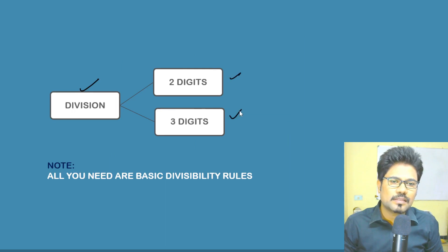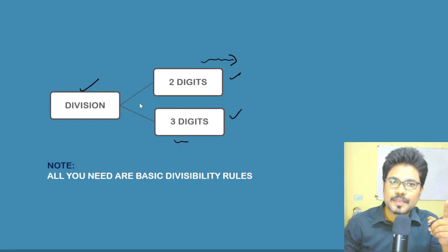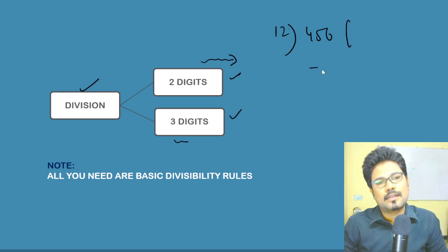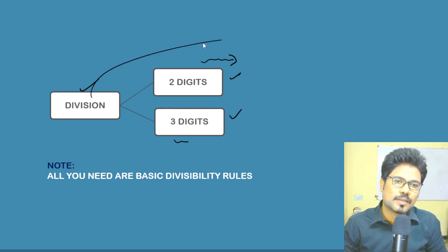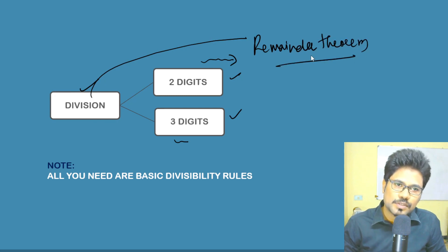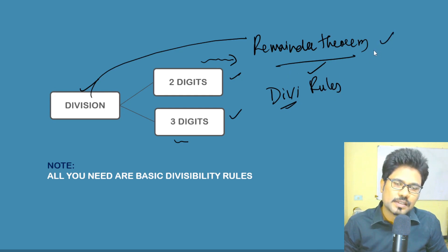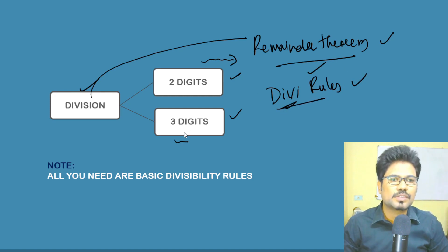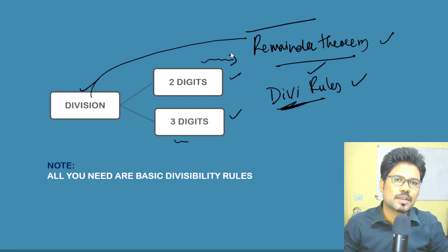Next, division — 2-digit and 3-digit division. 2-digit is simple. But for 3 and 4 digits we will discuss shortcut techniques. From division, remainder theorem comes and divisibility rules come. Don't think these are just basics — from SSC CGL to CHSL to banking, remainder theorem and divisibility rules are very important. SSC CGL tier rules will have minimum one to two questions from these topics. Feel the importance.